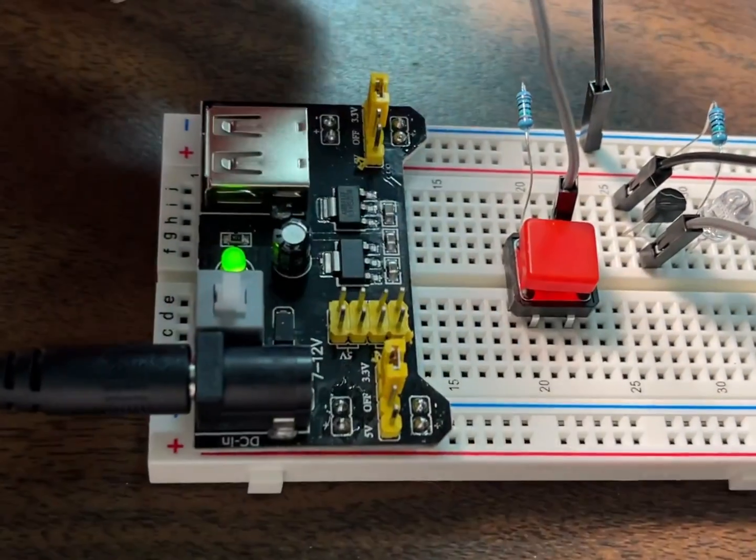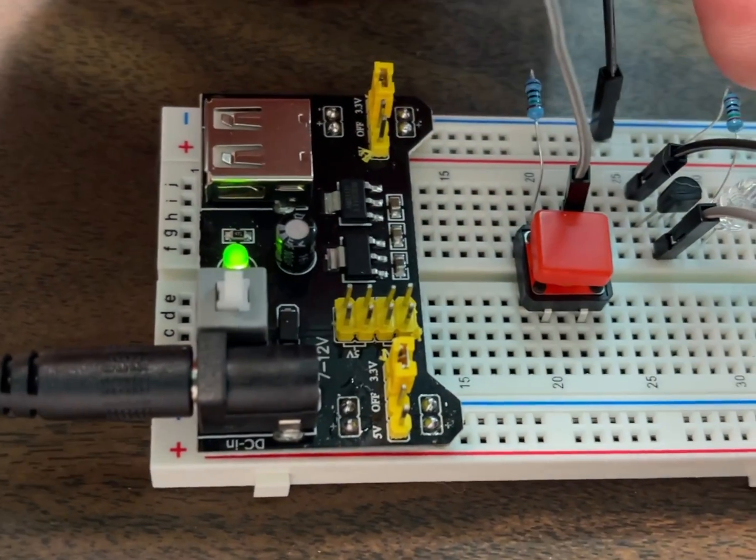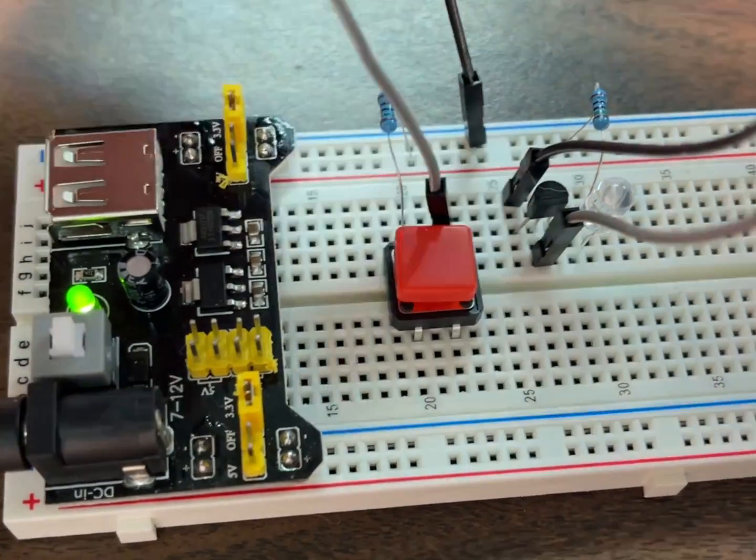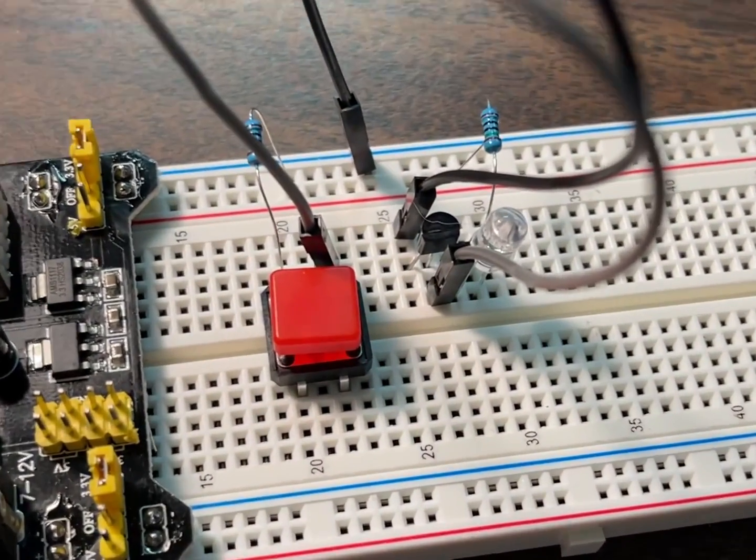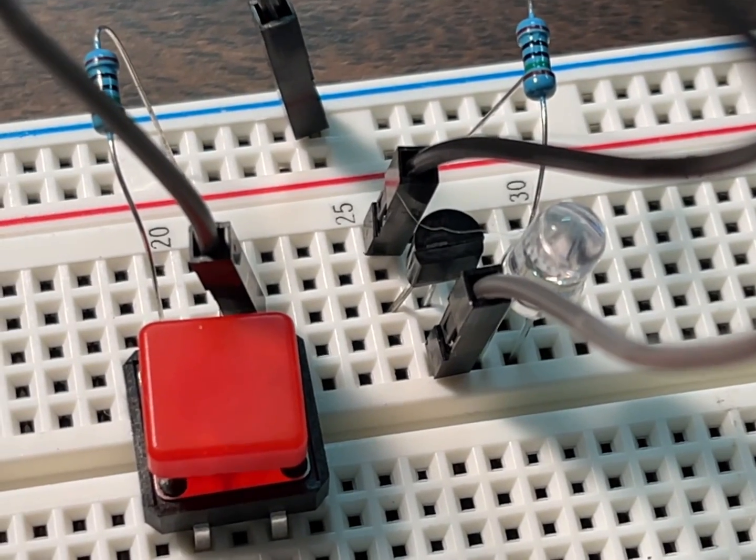These are both 150 ohm resistors, and this LED handles 20 milliamps up to about 1.9 volts or 2 volts.